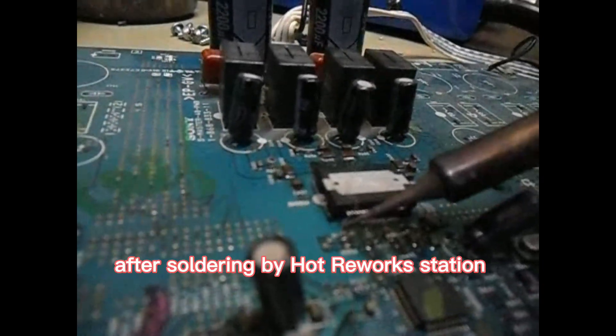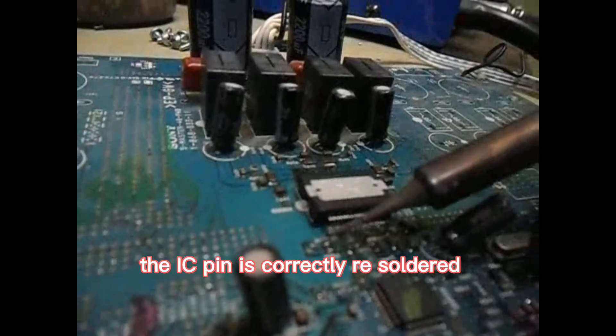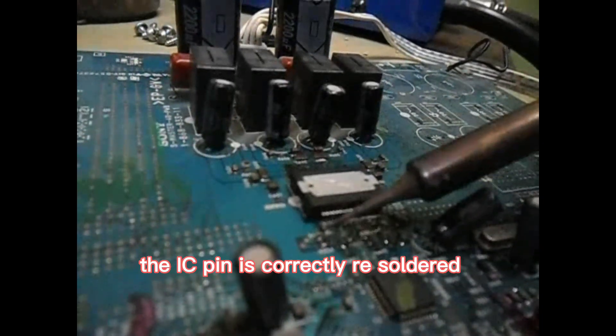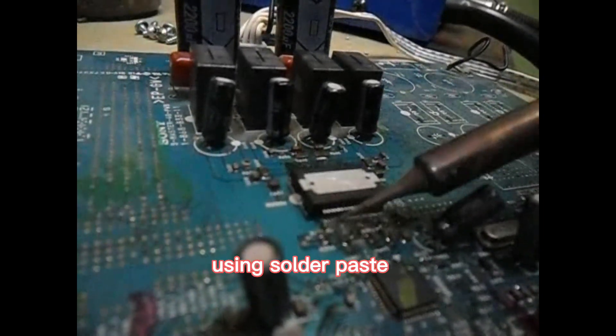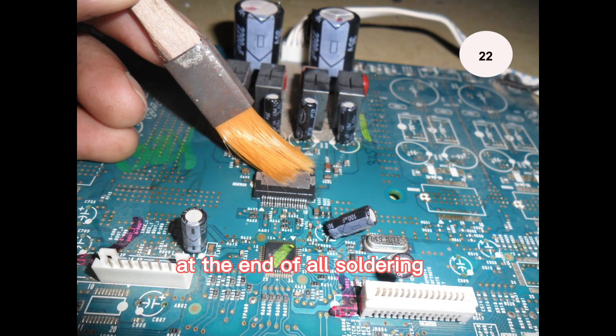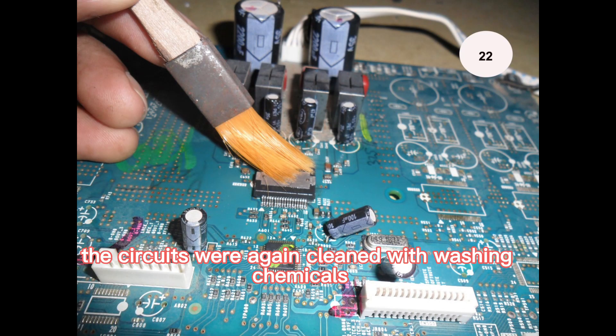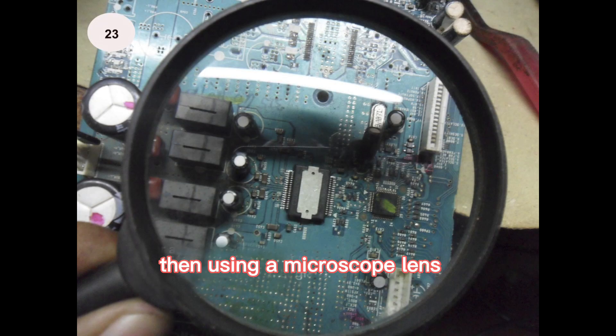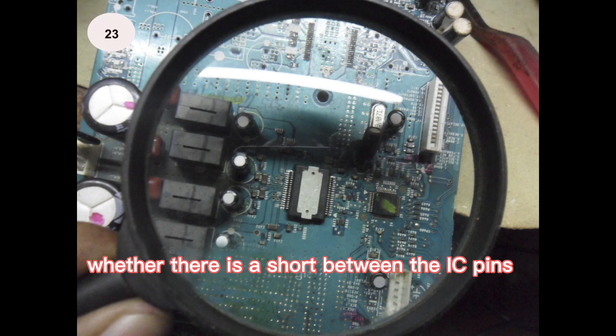After soldering by hot rework station, the IC pin is correctly re-soldered using iron solder bit using solder paste. At the end of all soldering, the circuits were again cleaned with washing chemicals. Then using a microscope lens, it was checked whether there is a short between the IC pins.